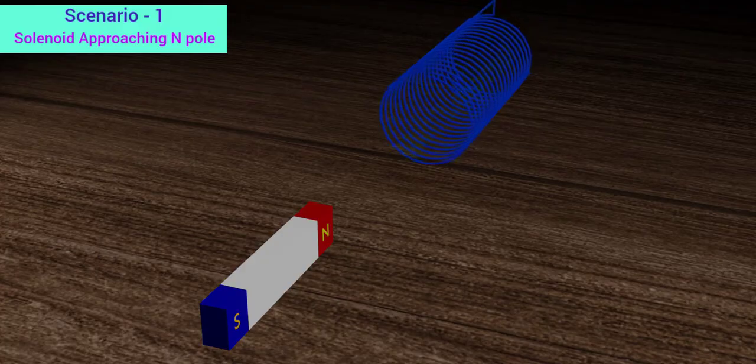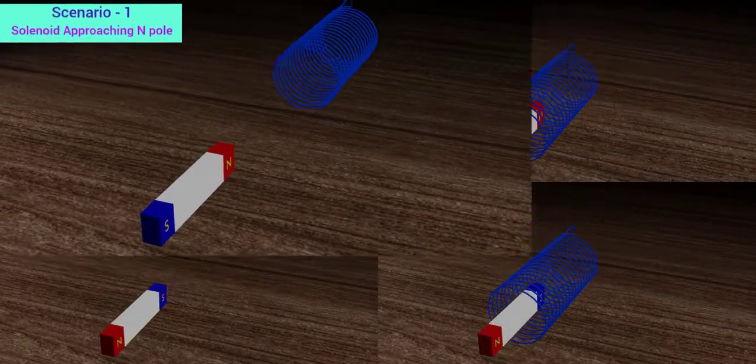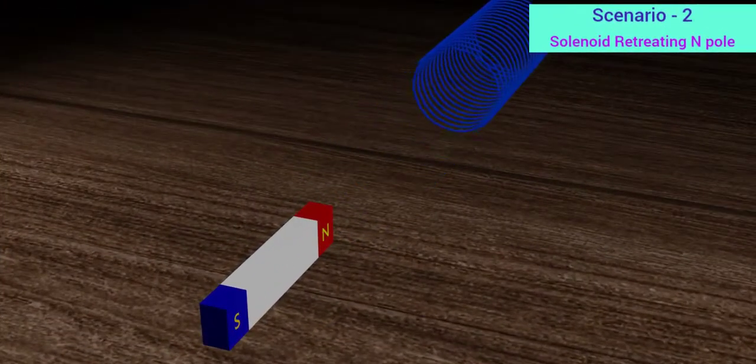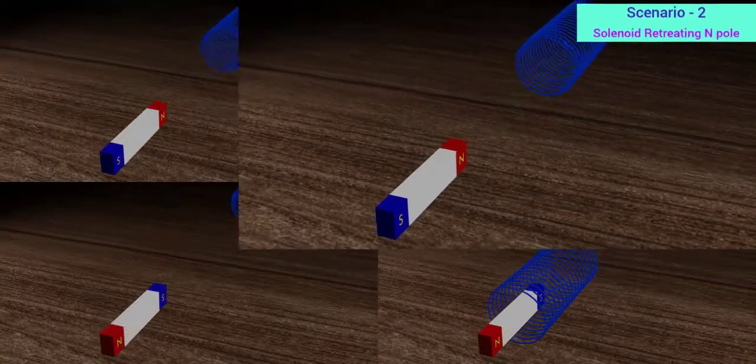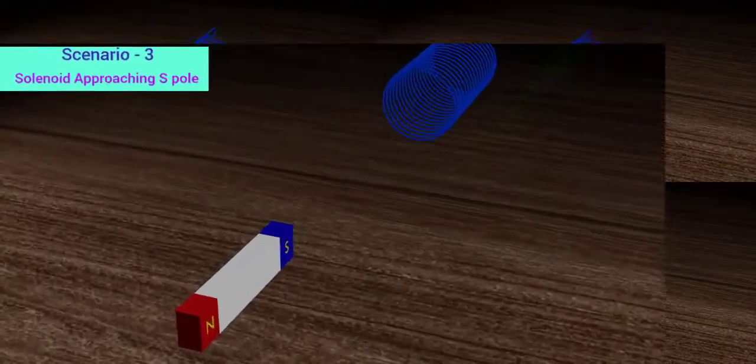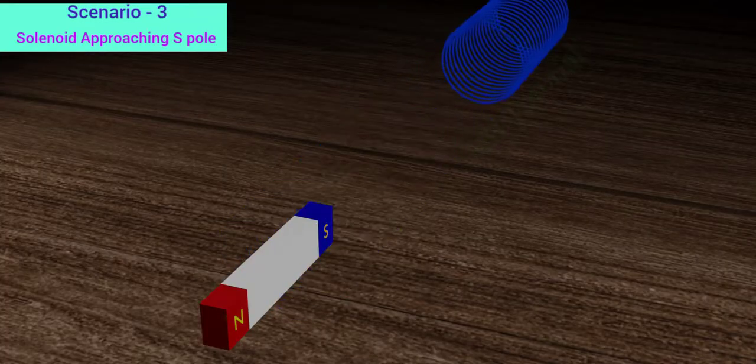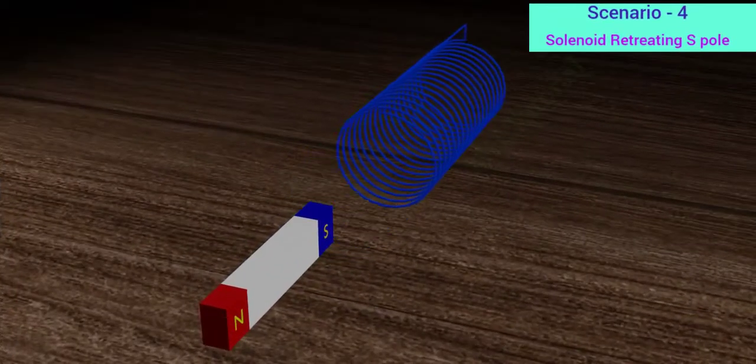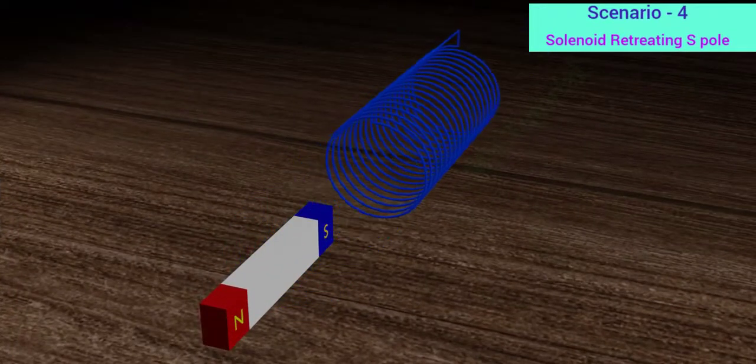In the first situation, the solenoid approaches the north pole of the magnet. In our second situation, the solenoid moves away from the north pole of the magnet. In the third scenario, the solenoid approaches the south pole of the magnet. And in the fourth and last scenario, the solenoid moves away from the south pole of the magnet.